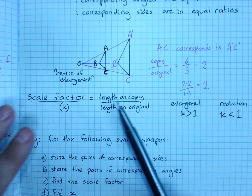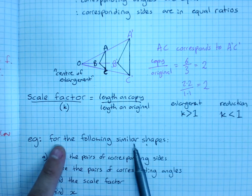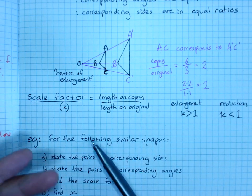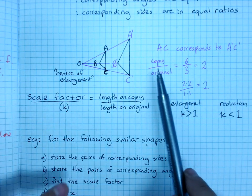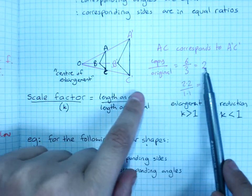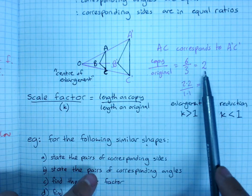If you are told that two shapes are similar, for example, for the following similar shapes, then one pair of sides is enough to find the scale factor. So when I did 6 over 3 is 2, if I know these are similar, then great, I know the scale factor is 2.